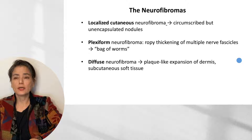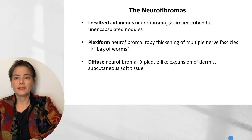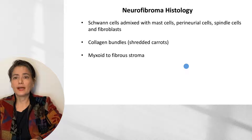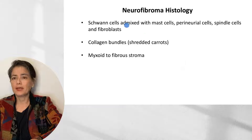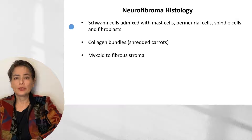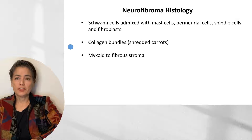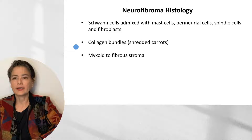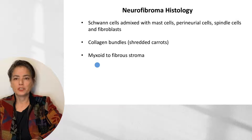Let's reflect on the histology. All three neurofibroma types will have similar histologic findings. They will be composed of an admixture of Schwann cells, mast cells, perineural cells, spindle cells, and fibroblasts. This is very different from what we see in a Schwannoma, in which there is only one dominant population — the Schwannian cells. We'll also see variable amounts of collagen, which can have a bundled appearance referred to as looking like shredded carrots, and the stroma may vary from myxoid — a bluish-gray gelatinous appearance — to quite fibrous.